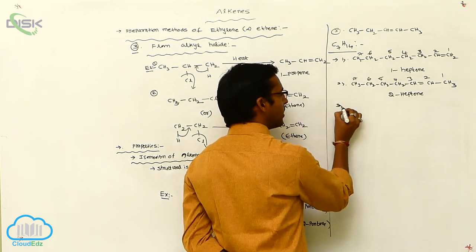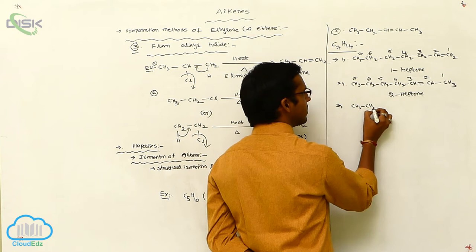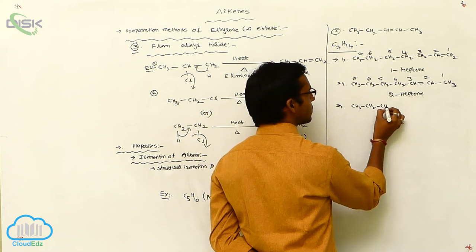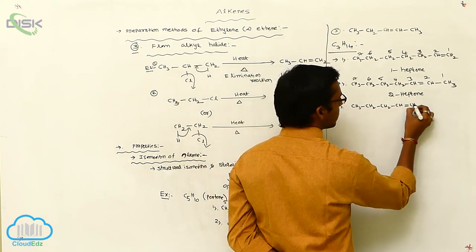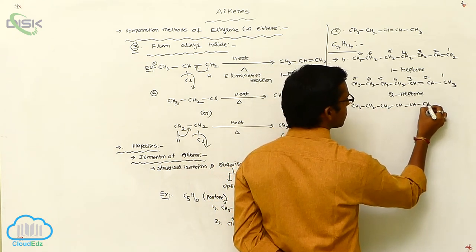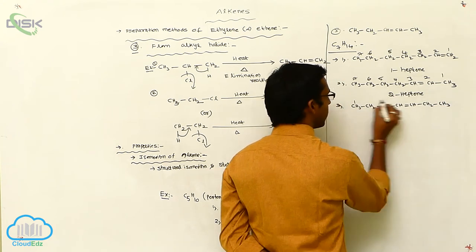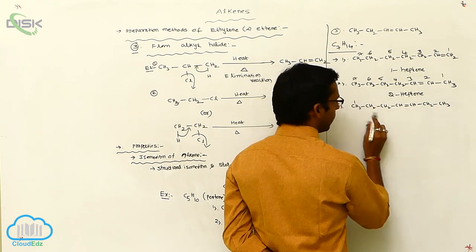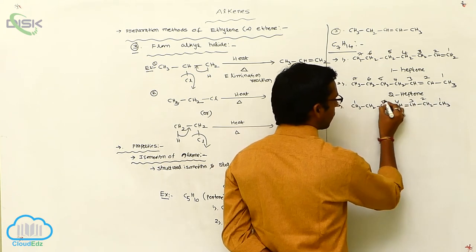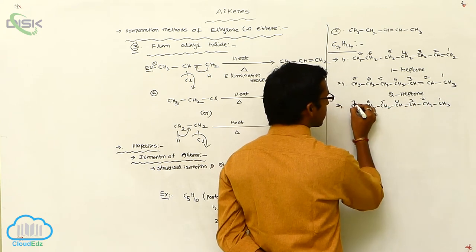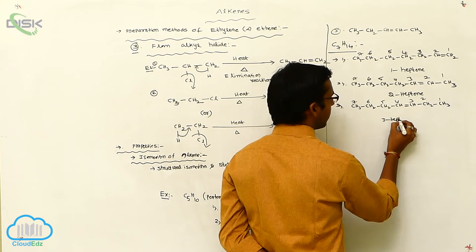Another positional isomerism is also possible: CH3, CH2, CH2, CH2, double bond, CH, CH2, CH3. Numbering 1 through 7. This is your 3-heptene.